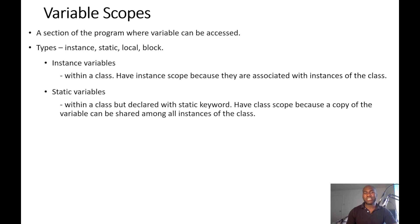Another type of variable scope we have is the static variables. These variables are also variables you declare inside the class, and you declare them with the static keyword. Unlike the instance variable, this class variable does not belong to any object.